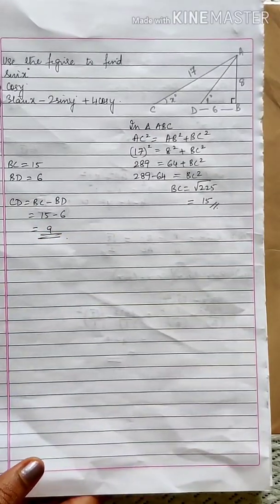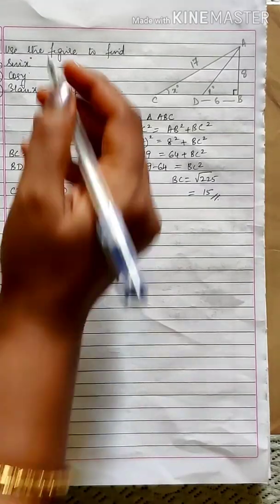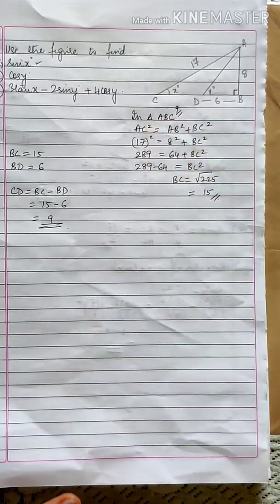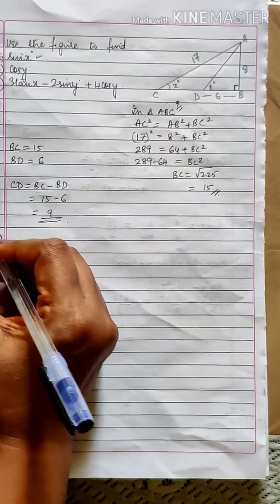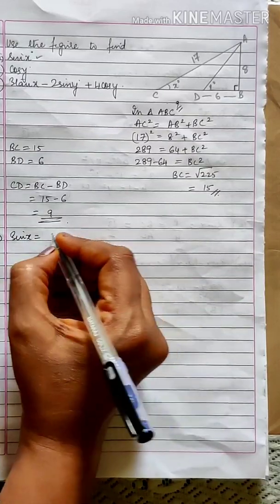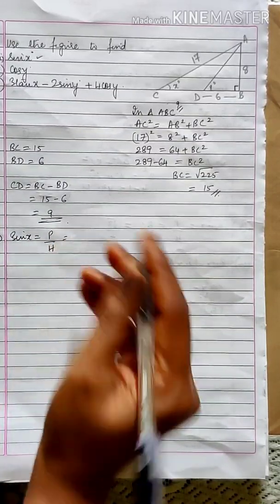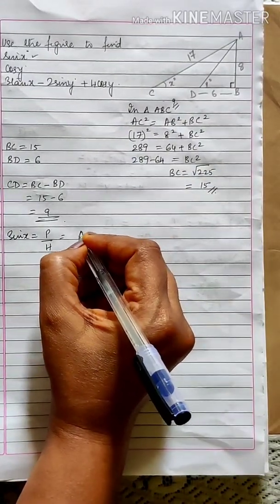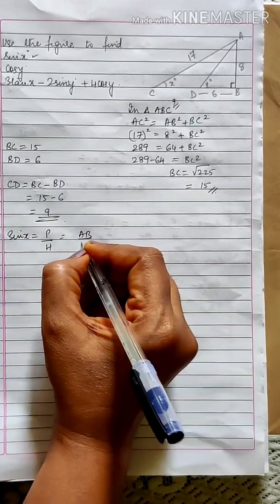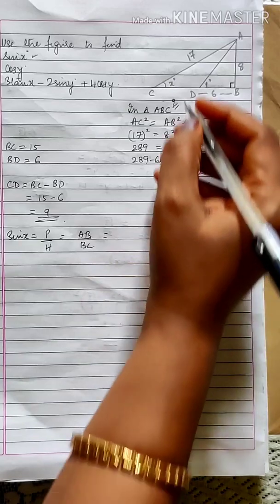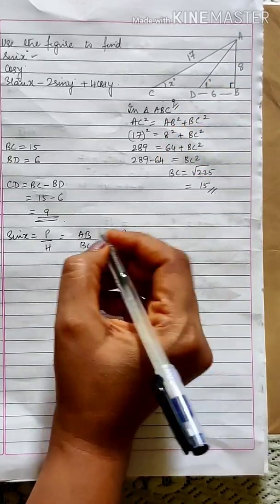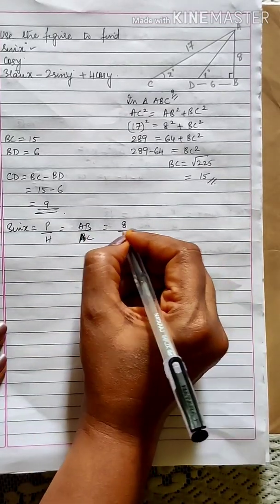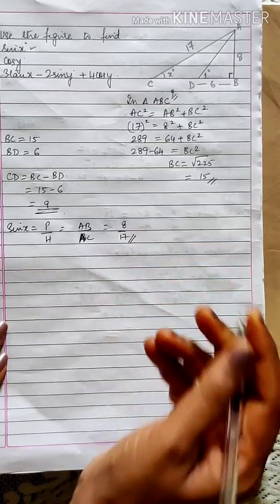You got CD as 9. Now finding the first ratio, sin x. We know the ratio for sin x is perpendicular by hypotenuse with respect to angle x. This will be AB upon AC — AB is 8 and AC is 17 — so sin x equals 8 upon 17.